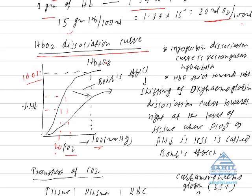At the level of tissues, where partial pressure of oxygen is less, the curve shifts towards the right. This rightward shifting of the curve, which occurs at tissue level where partial pressure of oxygen is less, pH is less, and partial pressure of CO2 is more, is called Bohr's effect. Bohr's effect promotes dissociation of hemoglobin, because when the curve shifts right, percentage saturation decreases, unloading oxygen and freeing hemoglobin.